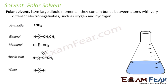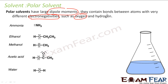So what is a polar solvent? Polar solvents have very large dipole. They contain bonds between atoms of different electronegativity, such as hydrogen and oxygen. They have a huge difference in electronegativity. So H2O will be a polar solvent, because between oxygen and hydrogen there is a difference in electronegativity.